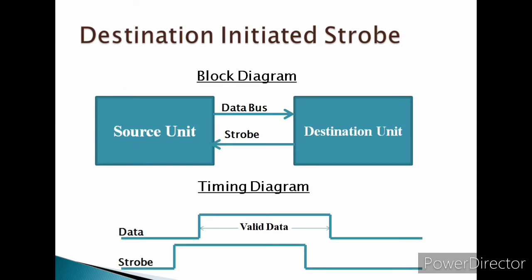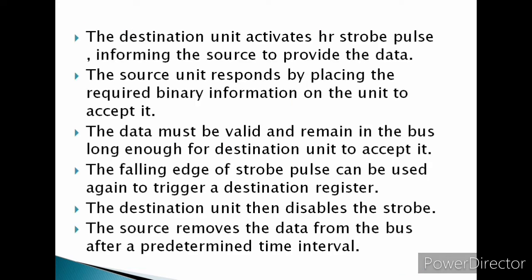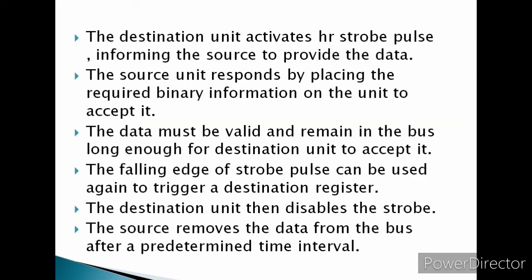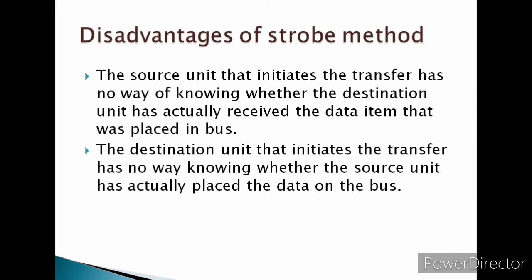The transfer of data between the CPU and an interface unit is similar to strobe transfer. The data transfer between an interface and an I/O bus is commonly controlled by a set of handshaking lines, because the strobe method has some disadvantages. That is, the source unit that initiates the transfer has no way of knowing whether the destination unit has actually received the data item that was placed on the bus.